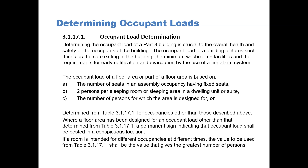Where a floor area has been designed for an occupant load other than that determined from Table 3.1.17.1, a permanent sign indicating that occupant load shall be posted in a conspicuous location within the room. If a room is intended for different occupancies at different times, the value to be used from Table 3.1.17.1 shall be the value that gives the greatest number of persons.